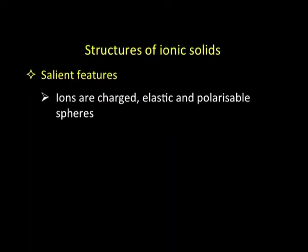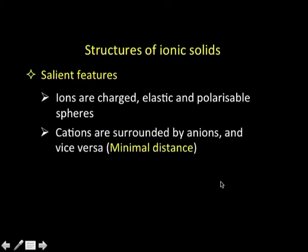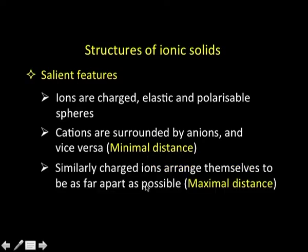Let us look at some of the salient features of ionic solids. The first and foremost thing is the ions are taken to be charged, elastic, and polarizable spheres, and the cations are surrounded by anions and vice versa. In any ionic solid, cations will be surrounded by anions and anions in turn will be surrounded by cations, because that is how electroneutrality comes into play. The two will be so closely packed that there will be a minimal distance between opposite charges. Secondly, similarly charged ions — anion-anion or cation-cation — will arrange themselves as far apart from each other as possible, because if two anions come too close they will repel each other and the structure will not be stable.